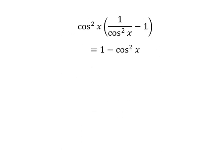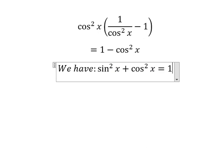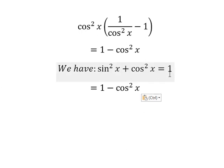We have the second formula here: sin squared x plus cos squared x equals 1. Now I will substitute 1 with this identity.